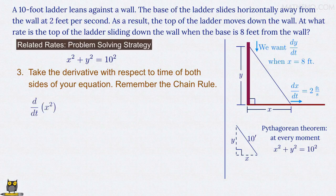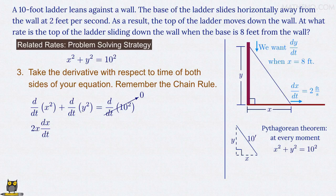We then have d/dt of x squared plus d/dt of y squared equals d/dt of 10 squared. The derivative of 10 squared, or of 100, is 0, since that's the derivative of a constant. On the left-hand side of the equation, we have the derivative d/dt of x squared, which is 2x times dx/dt, plus the derivative d/dt of y squared, which is 2y dy/dt. And that all equals 0.